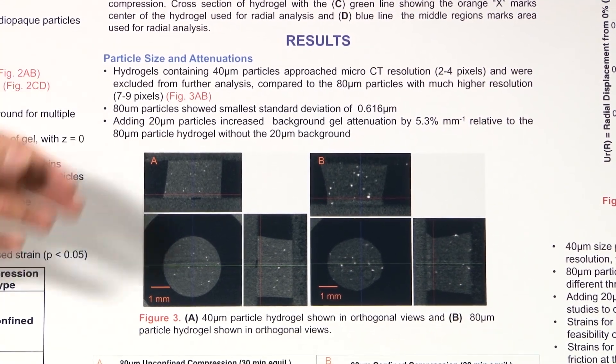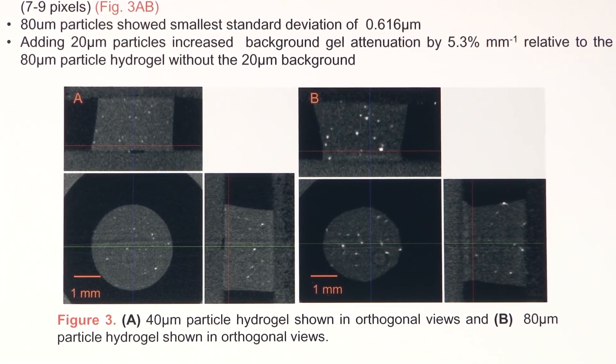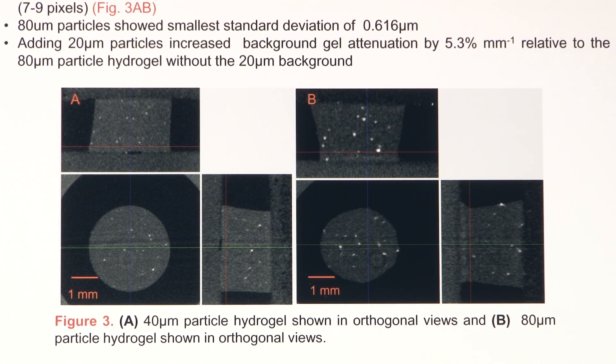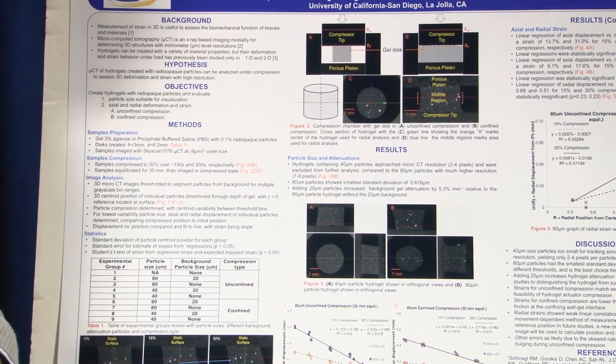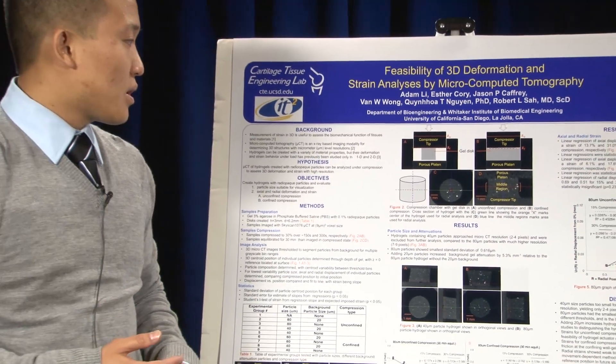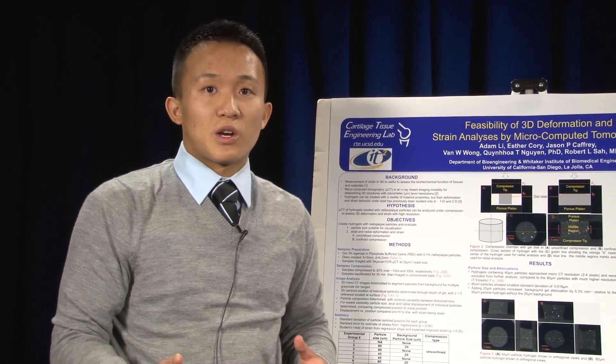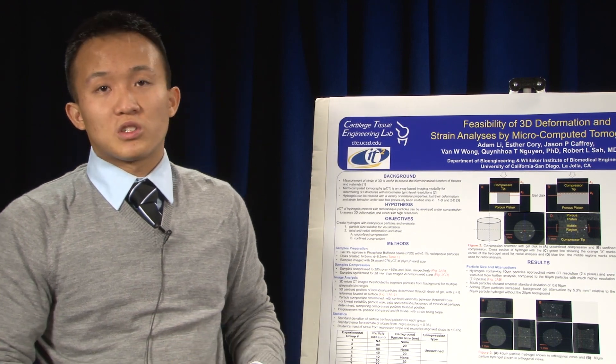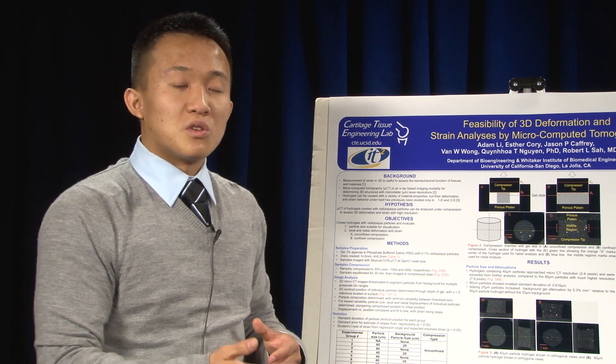The 80 micrometer particles also showed the smallest standard deviation from different thresholding ranges of 0.616 micrometers. So that's really small. We can be sure that a thresholding range that we choose is accurate enough to track the strain deformation behavior. We also tested that adding the 20 micrometer particles increased the background attenuation by 5.3 percent per millimeter relative to the 80 micrometer particles without the 20 micrometer background. Essentially, what the 20 micrometer particles did was it just made the hydrogel brighter overall. This will be useful in future studies.